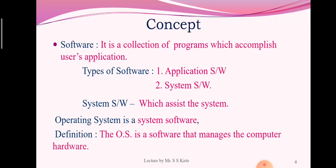Before starting the concept of an Operating System, it is essential to know the term software. A software is a collection of programs which accomplish a user's applications. There are two types of software: application software and system software. The application software is a software which fulfills user applications or executes user programs. The operating system also operates the system and assists the system, so we can say that the operating system is also system software.